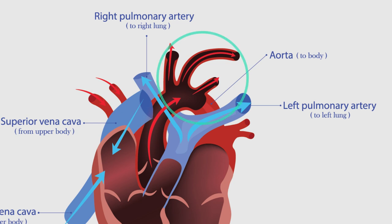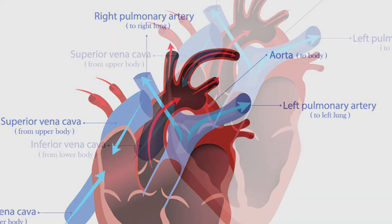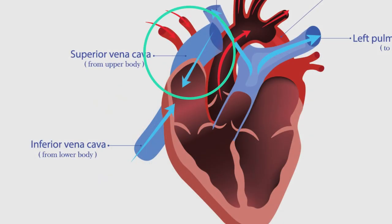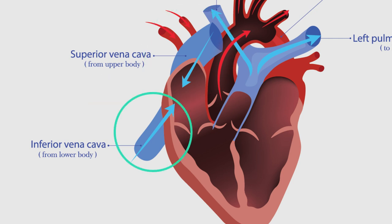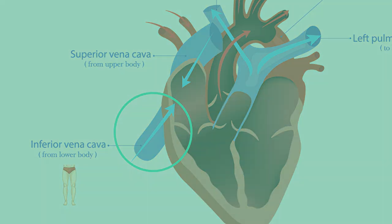The aorta pumps oxygenated blood from the heart's left ventricle to the entire body. The superior vena cava is the primary vein running from the head and arms that brings deoxygenated blood back to the right atrium. The inferior vena cava runs from the lower part of the body and brings deoxygenated blood back to the right atrium.